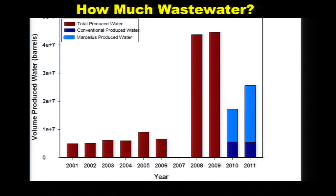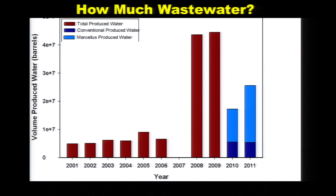You can still see now that we know the conventional from the Marcellus — the conventional produced water levels have stayed about the same, but the Marcellus production is generating a lot more water we need to manage and deal with: about twice as much as conventional in 2010 and about three times as much as conventional in 2011.